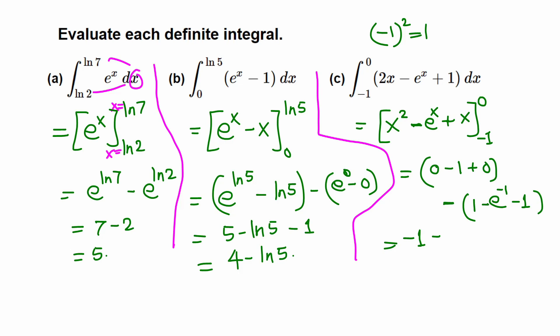Minus 1 minus what is here? Now let's see: 1 minus e to the negative 1 minus 1. 1 minus 1 is 0, so these two cancel. So minus and negative e to the negative 1, plus - minus and minus is plus - e to the negative 1.